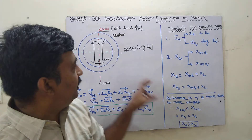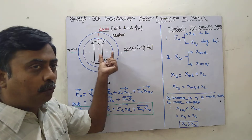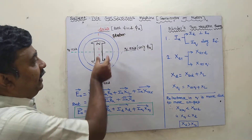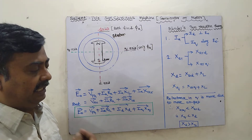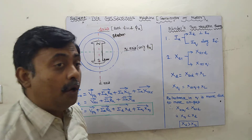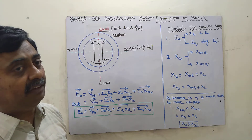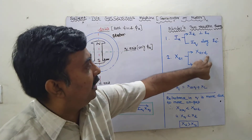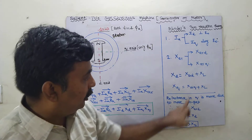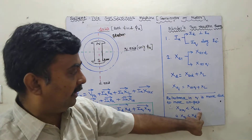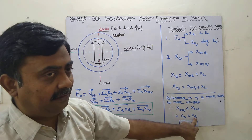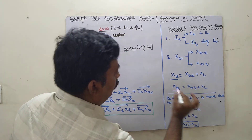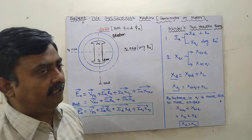Along the Q-axis the air gap is more, so reluctance is more and the X value will be less. Along the D-axis (direct axis) the air gap is less. Therefore XQ is less than XD, or equivalently XD is greater than XQ. This is the key relationship we have to know: XD is the direct axis reactance and XQ is the quadrature axis reactance, and the difference arises because the air gap is not uniform in a salient pole alternator.